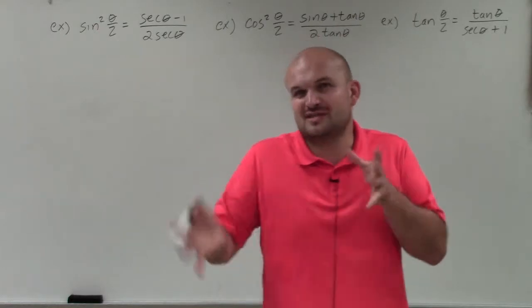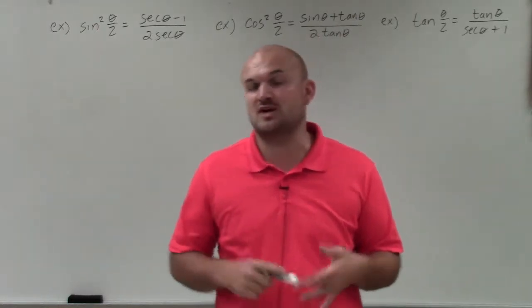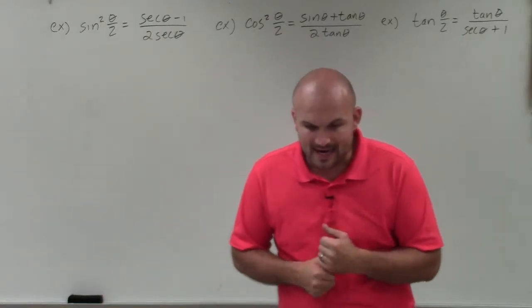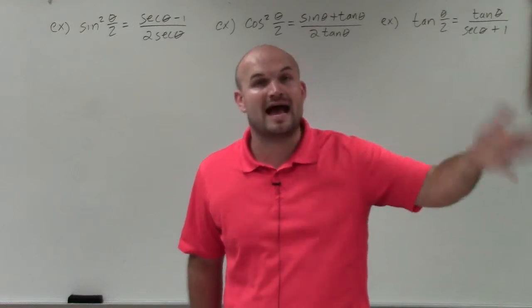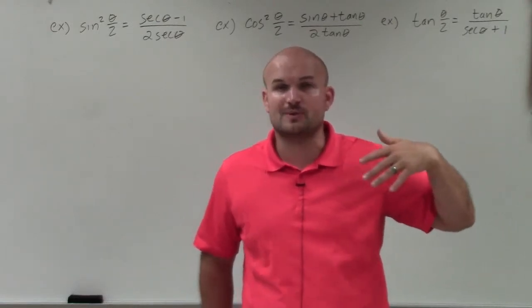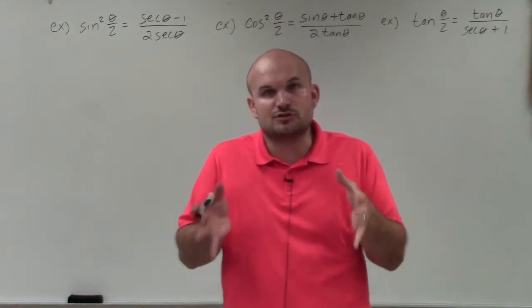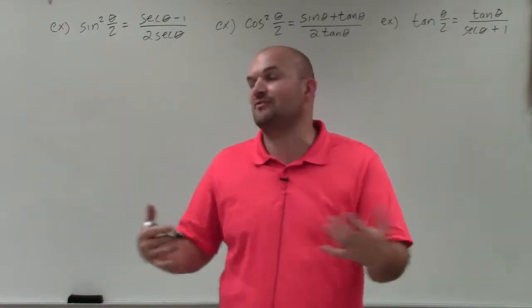We'd always look at usually the side that had the most difficult, had a fraction, or had operations, adding, subtracting, multiplying binomials, and so forth. However, whenever we see something change, like a double angle, or a half angle, or the sum and difference of two angles, then we want to look into applying those formulas to help rewrite one of the sides to further simplify it.